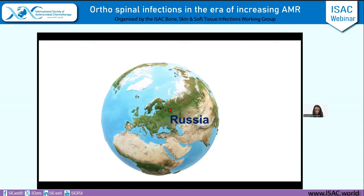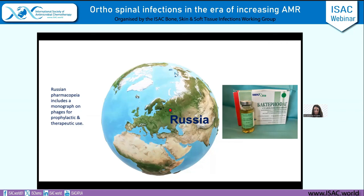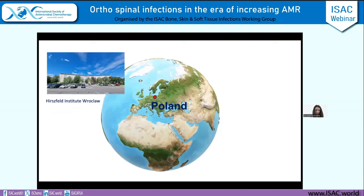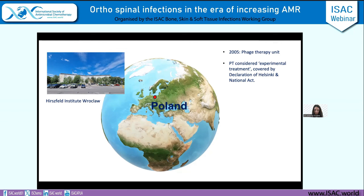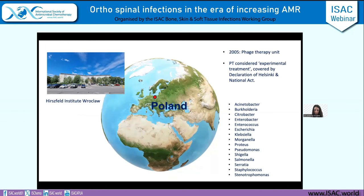In Russia, there is a pharmacopoeia including a monograph for phages on prophylactic and therapeutic use, with anti-staphylococcal phages produced by Russian biotech companies — though not to GMP standards. In Poland, the Hirszfeld Institute in Wrocław set up a phage therapy centre in 2005 and is able to administer phage therapy as an experimental treatment covered by the Declaration of Helsinki and the National Act — all for compassionate use and individualized therapy.